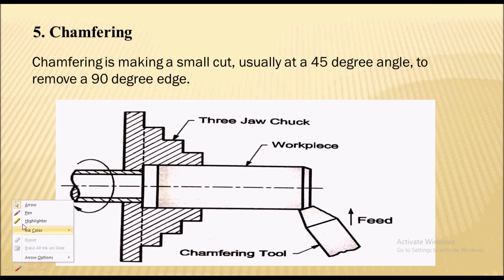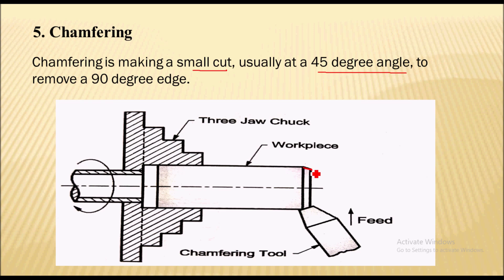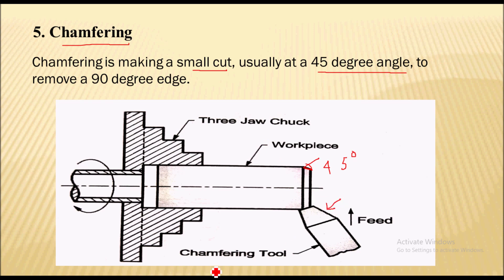The next operation is chamfering. Chamfering is making a small cut, usually at a 45 degree angle, to remove the sharp corner of the workpiece. Sharp corners can injure the person handling the workpiece, so to avoid injury we bevel the end of the workpiece — that is the chamfering operation. This operation is performed using a chamfering tool.